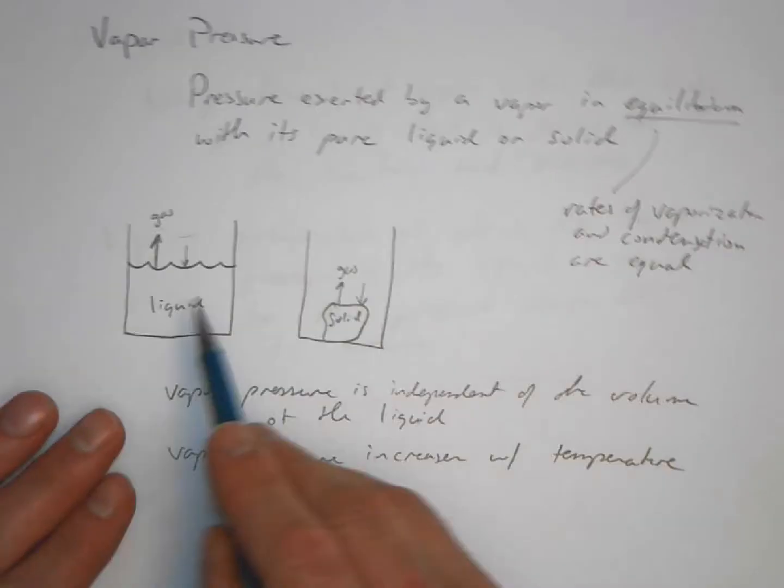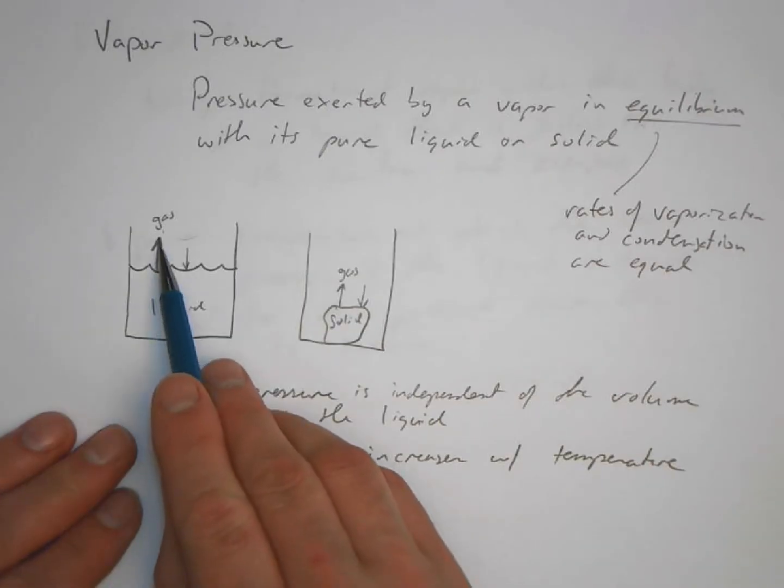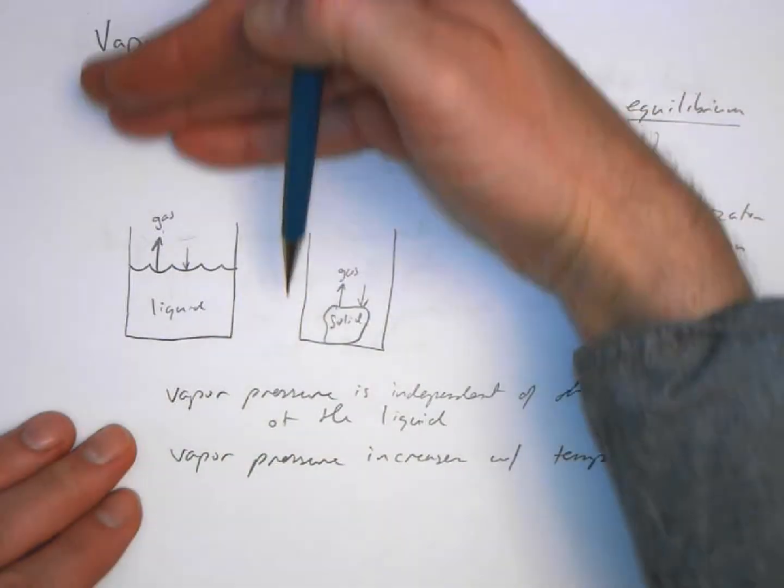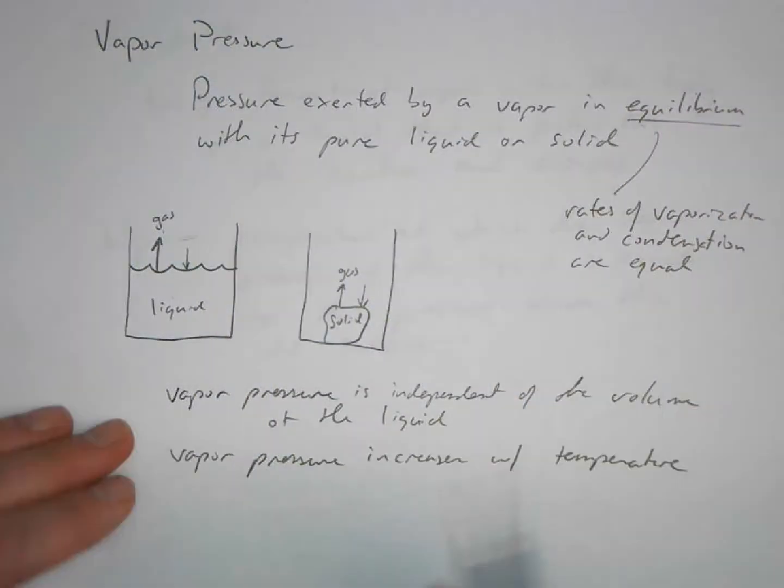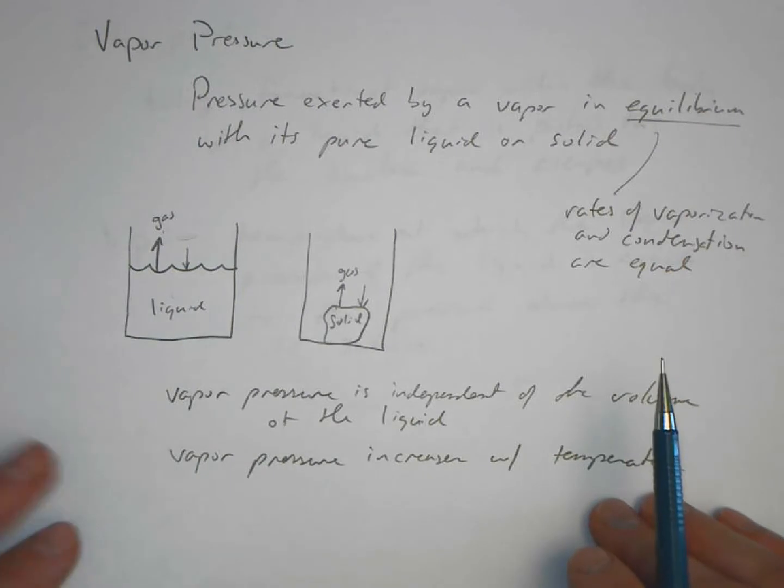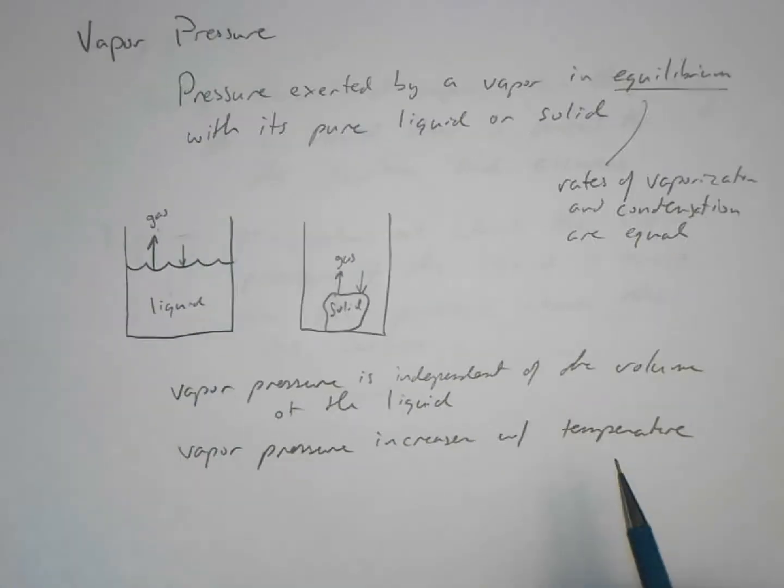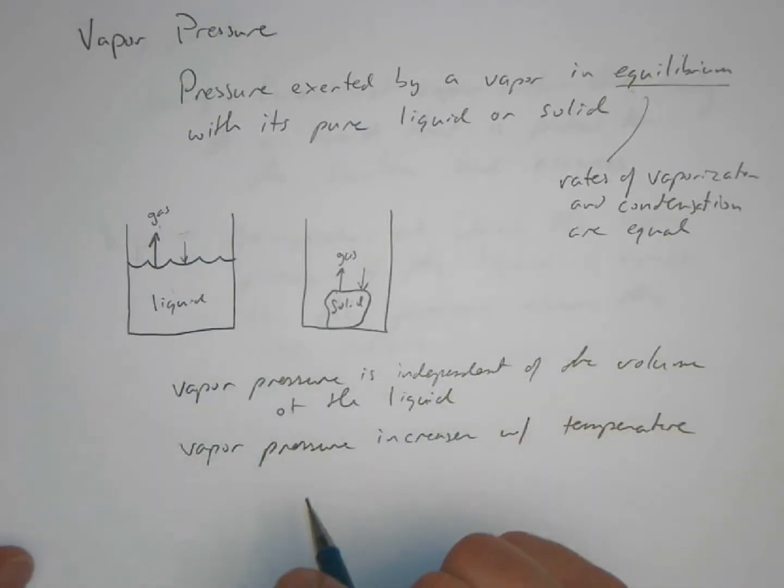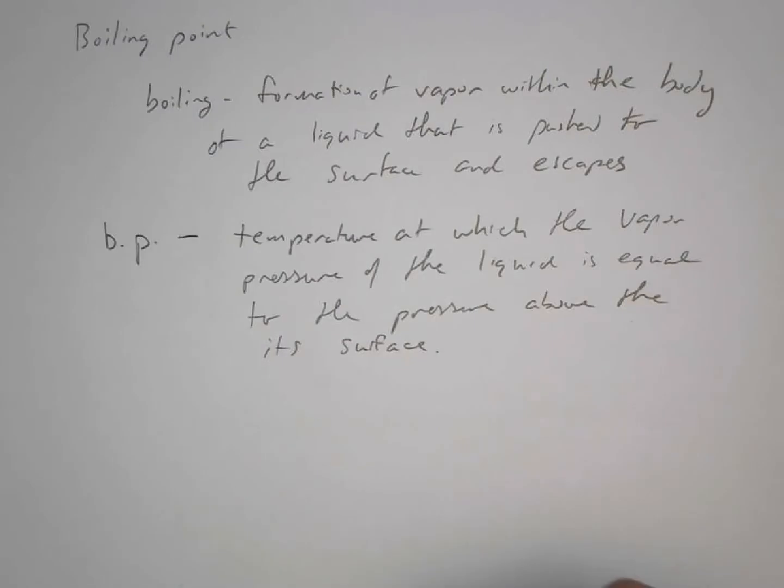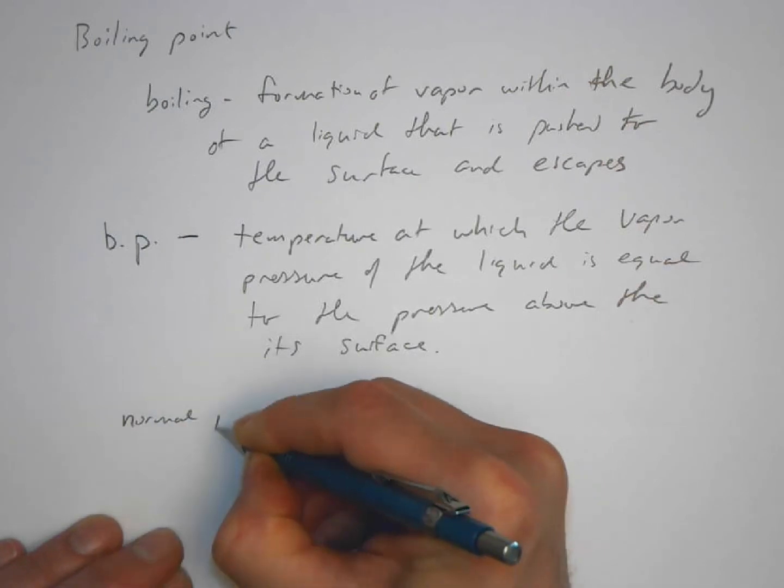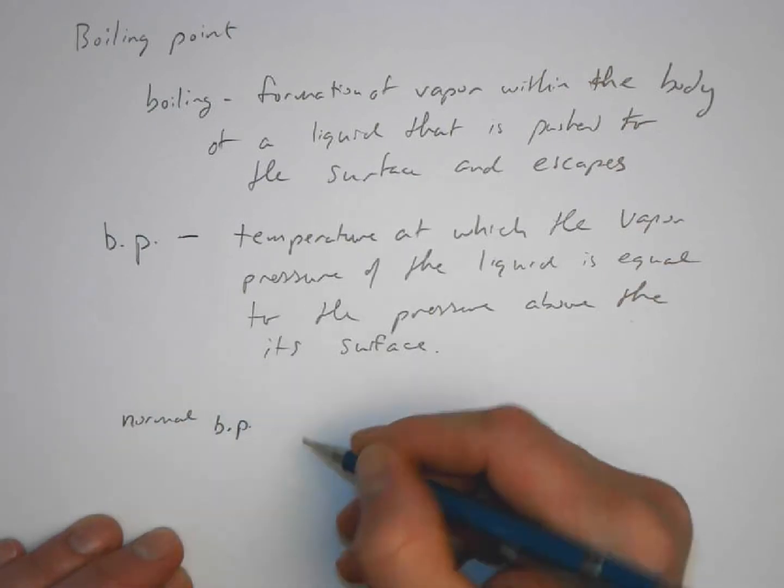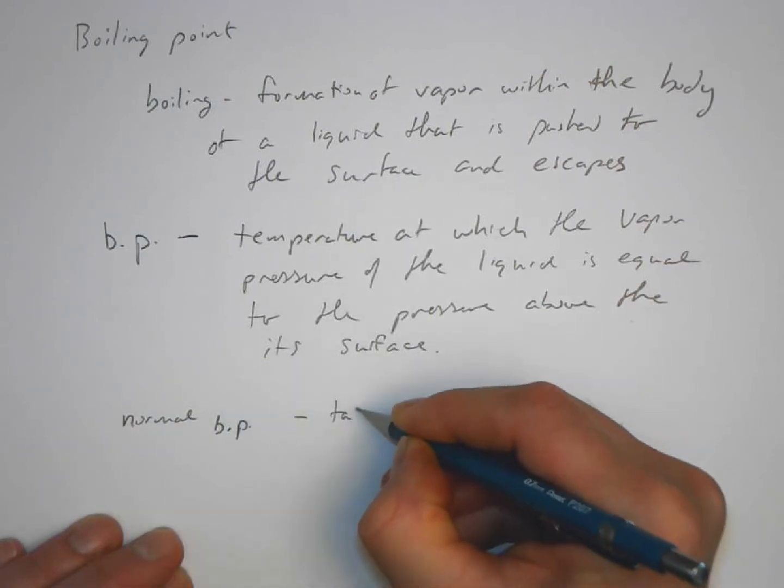So in other words, the pressure that's exerted by this gas as the liquid is evaporating is equal to the pressure that's above its surface. Oftentimes we think of the boiling point as being at one atmosphere of pressure, in other words room conditions. At that point we would talk about it as being the normal boiling point, which would be the boiling point at one atmosphere of pressure.